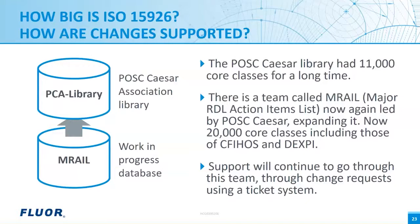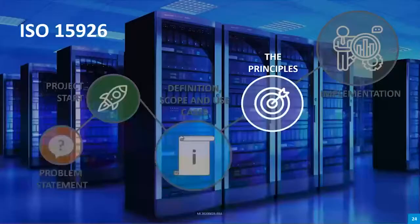There is a team called MRAIL — Major RDL Action Item List — now again led by POSC Caesar, expanding the library. It now has 20,000 core classes — about 10,000 added. But it is never complete; engineering projects will come up with new core classes to add. So if you do a project, you maintain your own RDL, and later you can submit new classes for addition to MRAIL. MRAIL then proposes these new classes for addition to POSC Caesar, which is the standard RDL. POSC Caesar submits additions to ISO every few years.